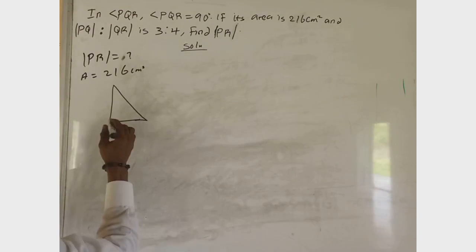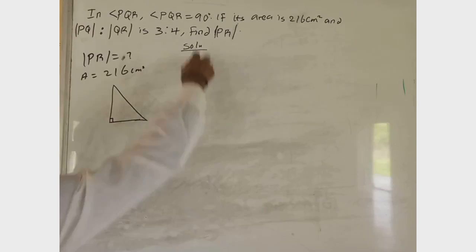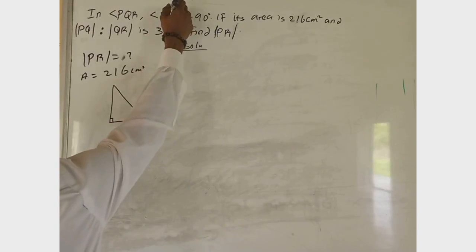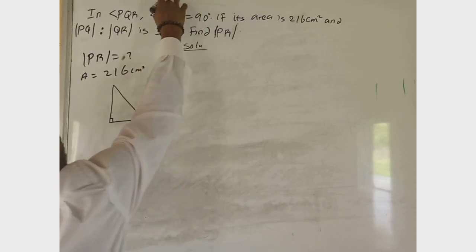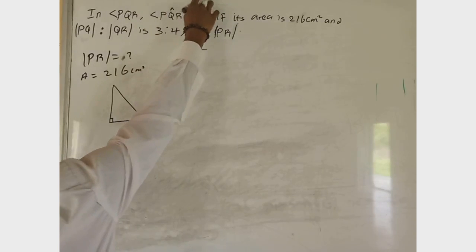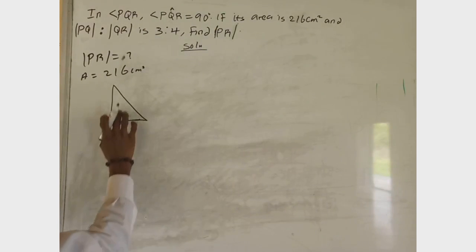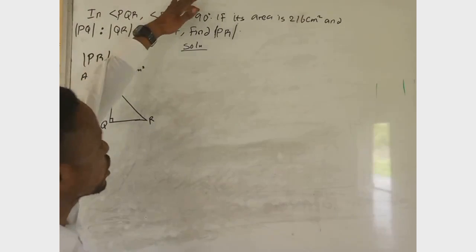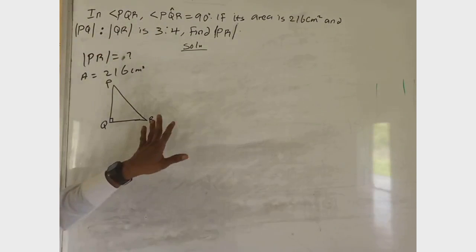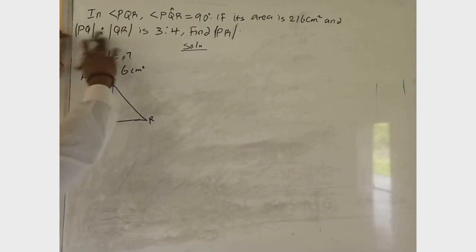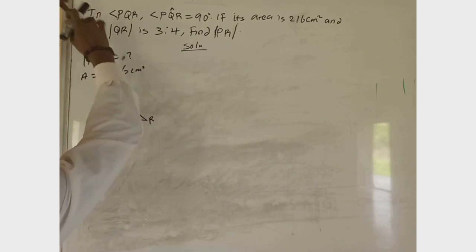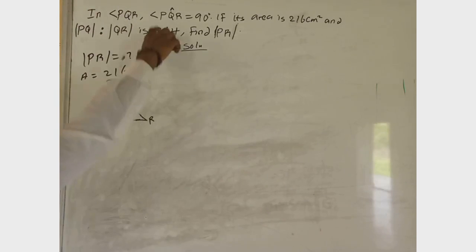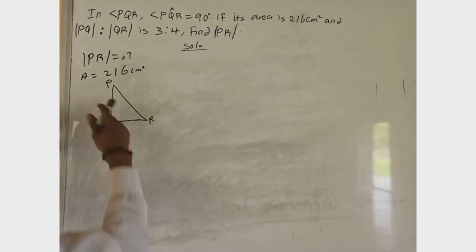The angle at Q is 90 degrees. So here we have Q at 90 degrees, we have P, and we have R. This is our angle Q at 90 degrees, this is angle P, and this is angle R. We are given the two ratios: PQ to QR is equal to 3 to 4.